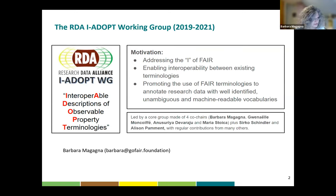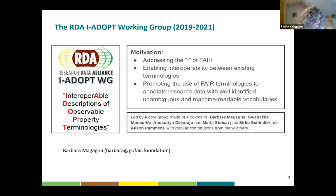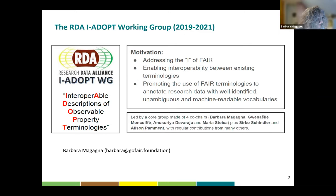Our motivation was and is to address the interoperability — the 'I' of the FAIR principles — to enable interoperability between existing terminologies and to promote the use of FAIR terminologies to annotate research. This group has four co-chairs: myself, Gwen Moincoiffé from NERC Vocabularies, Anu Soria de Barayo from CSIRO, and Maria Stoica from the University of Colorado, who co-developed the scientific variable ontology. Alison Perman and Sikushin Law were also core developers.